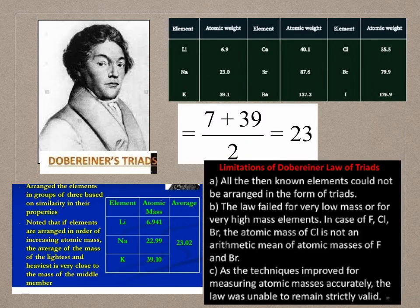There were limitations of Döbereiner's Law of Triads. Other known elements could not be arranged in the form of triads. The law also failed for elements of very low mass or very high mass.